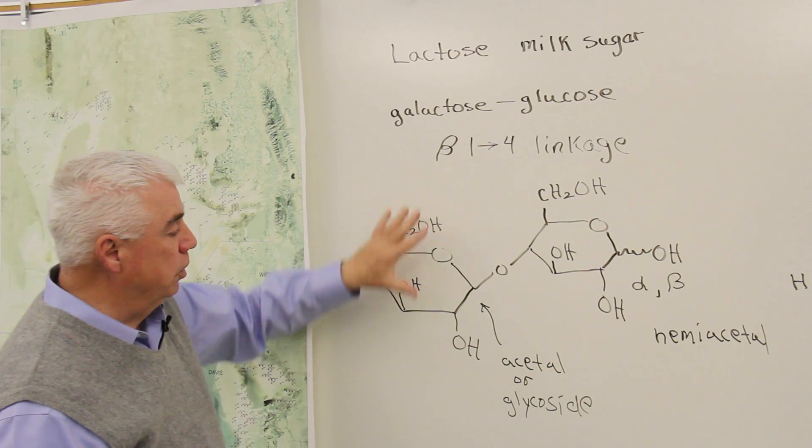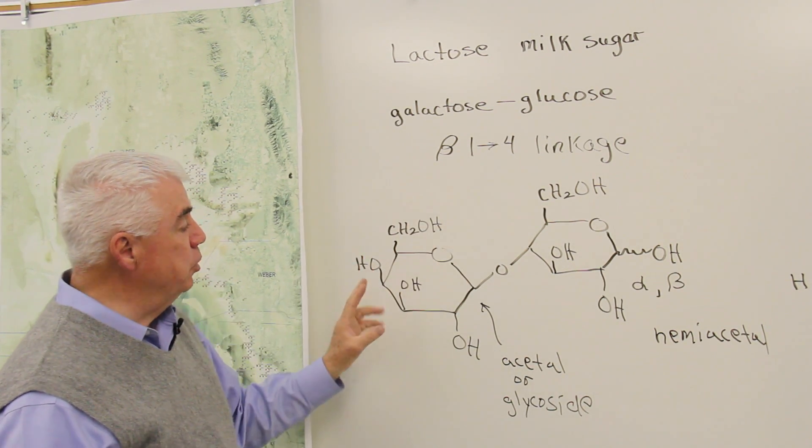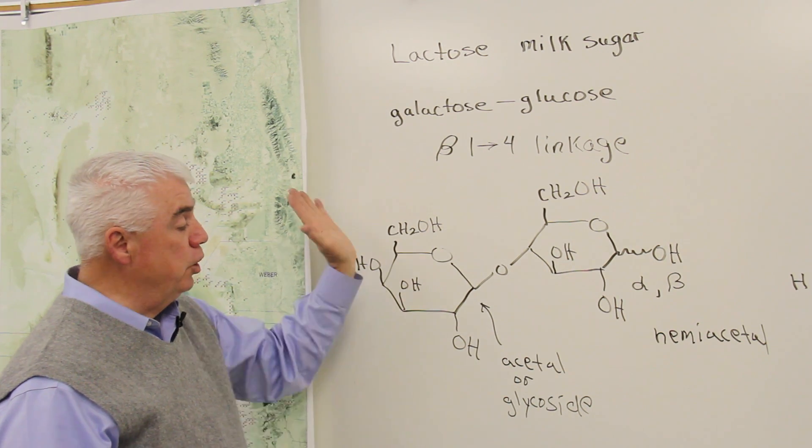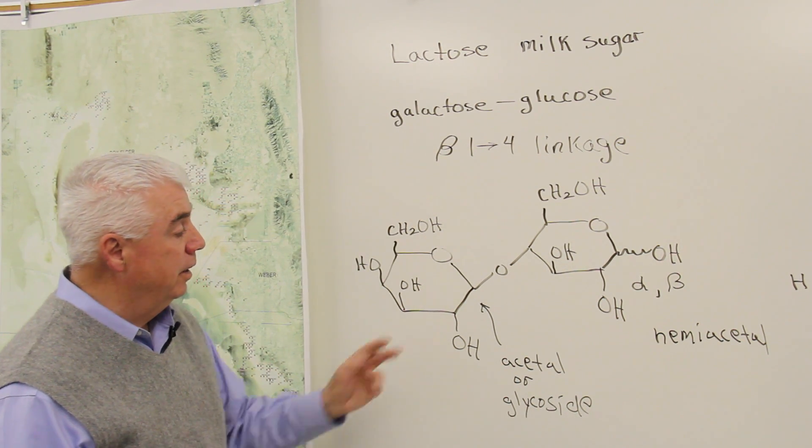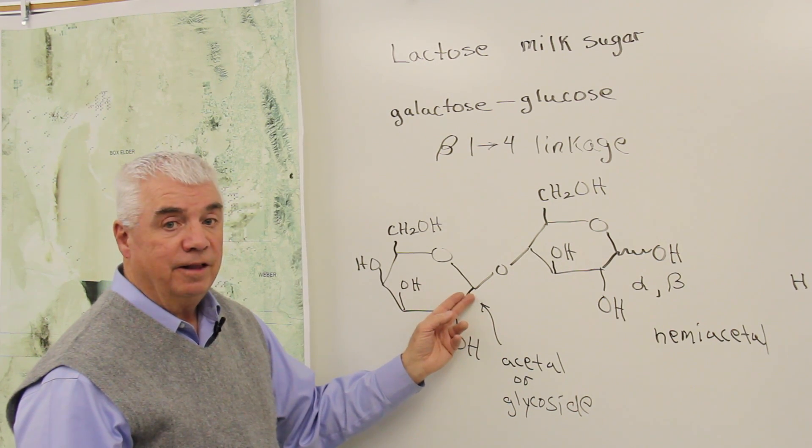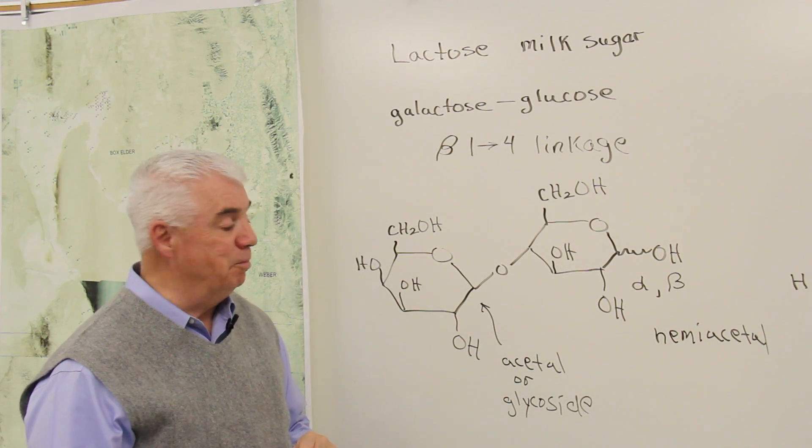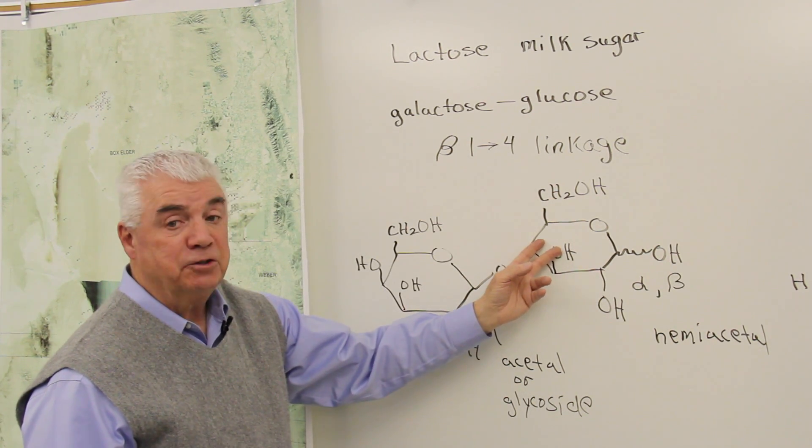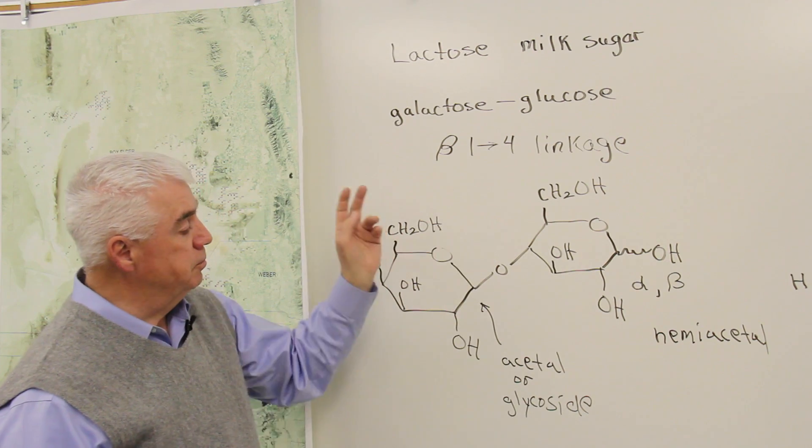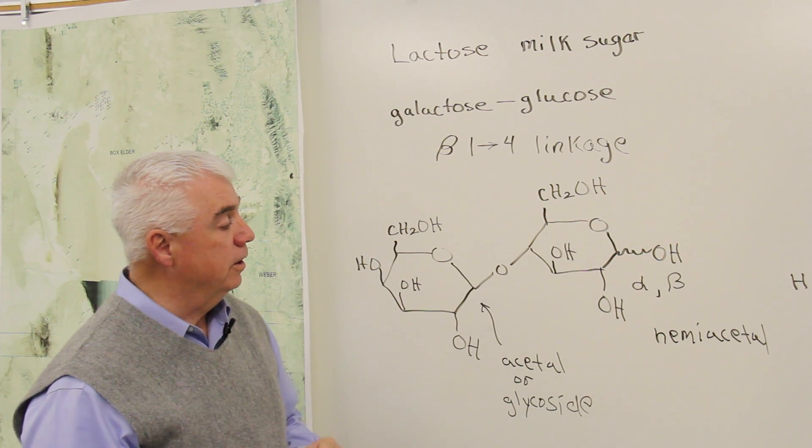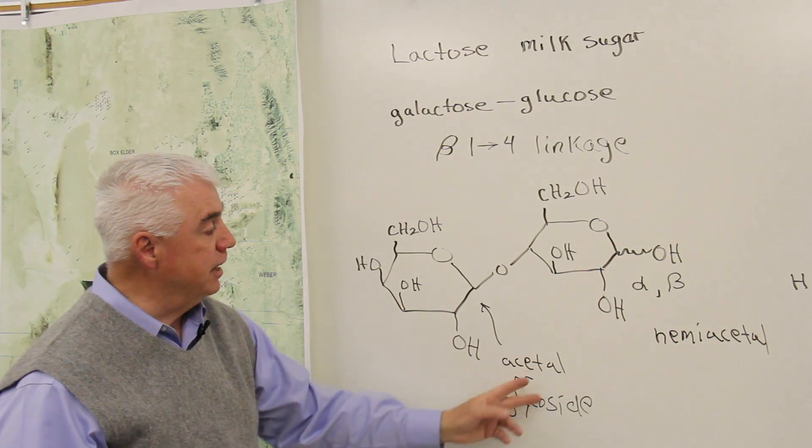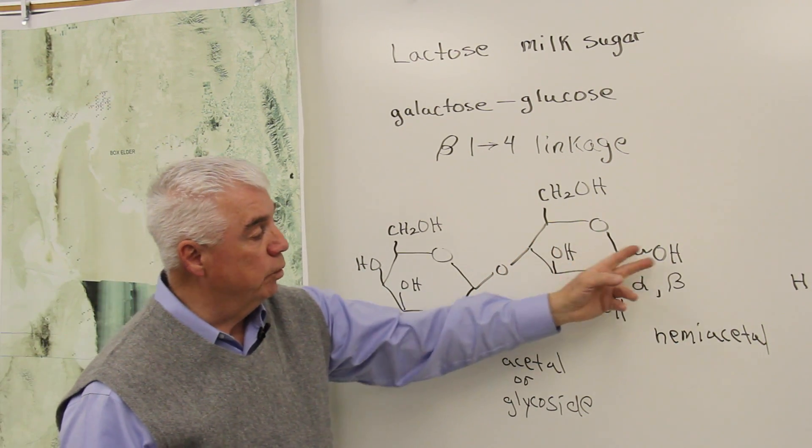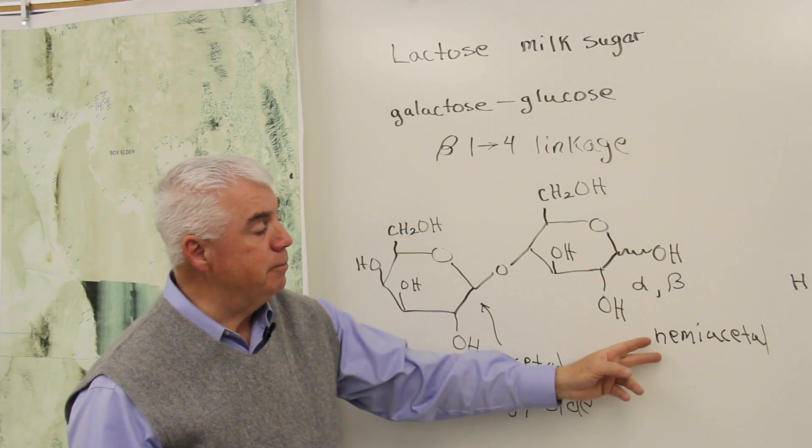They're linked by a beta 1 to 4. Let's have a look. Here's a galactose unit on the left. It differs only at one position from glucose. Here at position 4, the OH is up rather than down. But at position 1, that oxygen is pointing up. So it's beta at position 1. And it's down. It has to be down if this is a glucose unit. So it's beta 1 to 4 linkage. Here's an acetal or a glycoside over here on the left. Over on the right, with that OH, it's a hemiacetal.